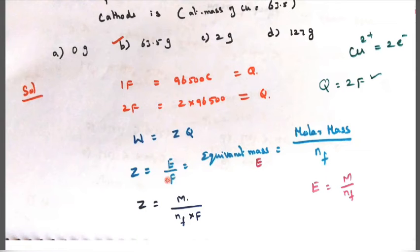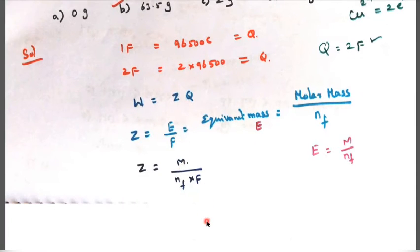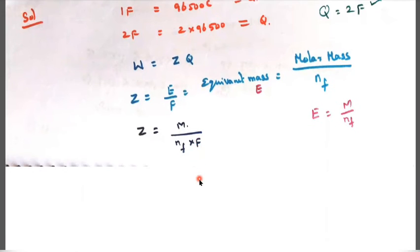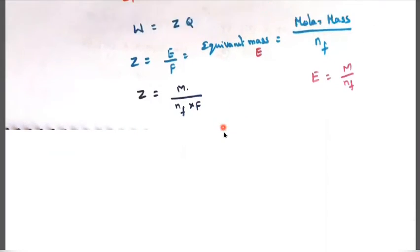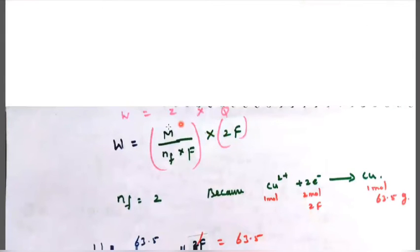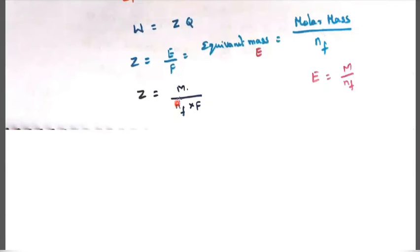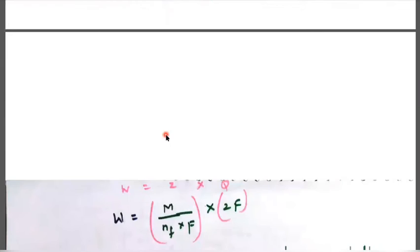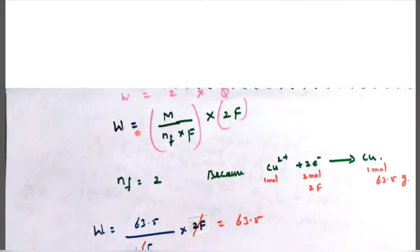What is Z? Z is the electrochemical equivalent. Z equals E by F. E is equivalent mass by Faraday. What is equivalent mass? Equivalent mass is molar mass divided by Nf. E equals molar mass M divided by Nf. Substitute this E value here: M divided by Nf into F. F is Faraday 96,500 coulombs. But here it involves two F, so here two F we should put. W equals Z into Q. Z value equals M by Nf into F. Q is 2F.